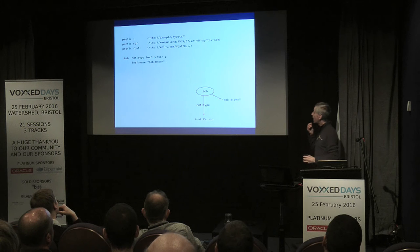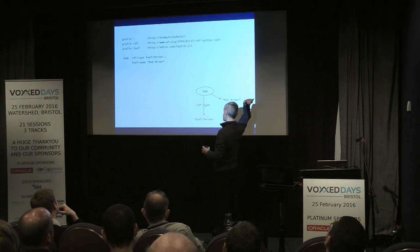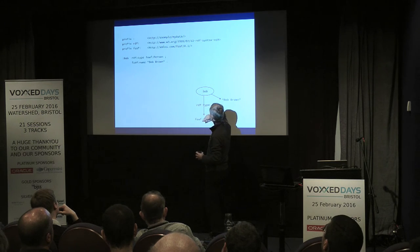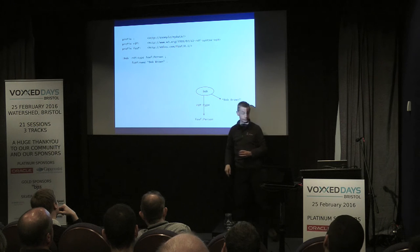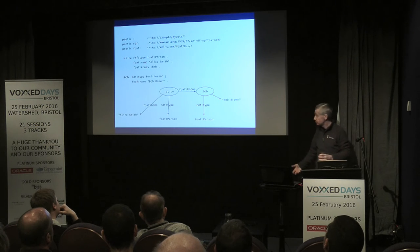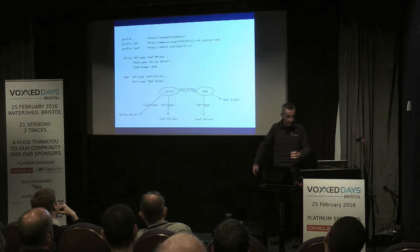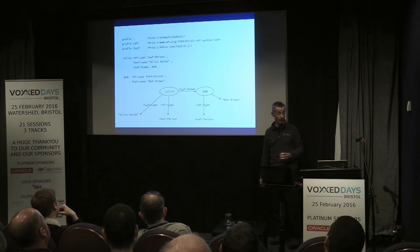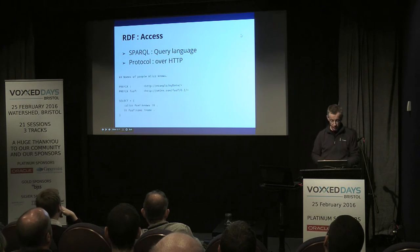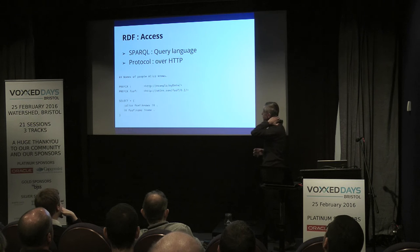Similarly, somewhere else on the internet there's data about Bob: Bob Brown, type person. In RDF you can combine data simply by concatenating the files, and that gives you the combined graph — talking about those people and their names.